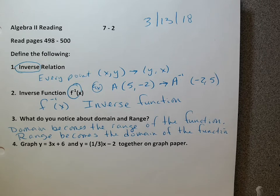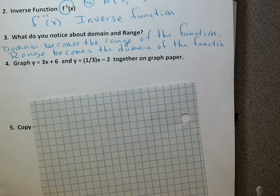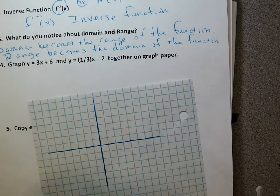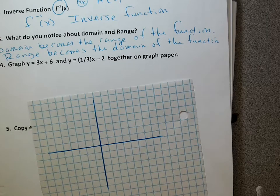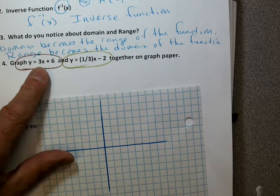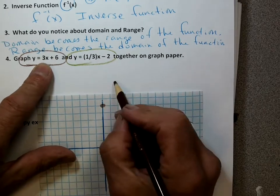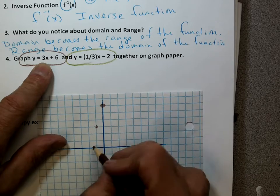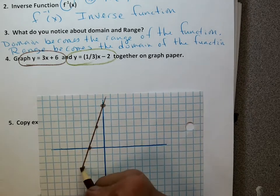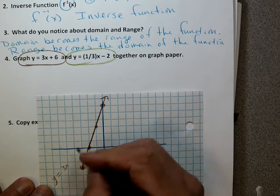I'm going to get out graph paper and graph y equals 3x plus 6, and also one-third x minus 2. I'll put the first one in brown and the second in green so you can see them together. If I graph 3x plus 6, I start at 6 on the y-axis and go up 3 over 1. That's my y equals 3x plus 6.